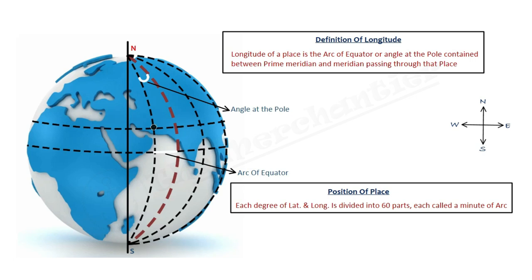From that place to prime meridian, we take the arc of equator, so that will be the longitude of that place, or the arc of equator or angle at pole.